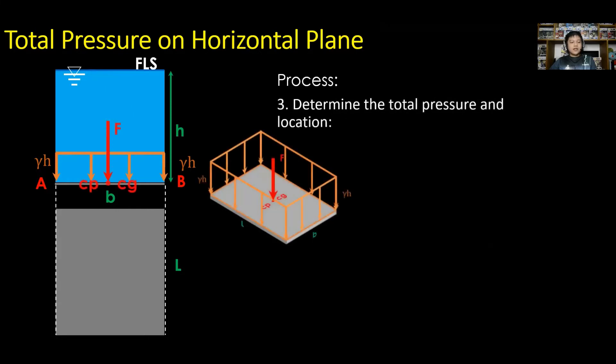We can already estimate the value of the total pressure, which is F. Where F is the volume of the pressure diagram, that is the area of the surface multiplied with the pressure intensity of our diagram. For the sample diagram, F is equal to the area of the surface, that is B times L, then multiply with the intensity, that is gamma times H.